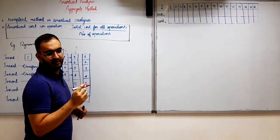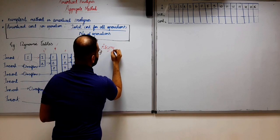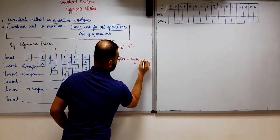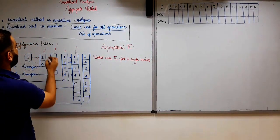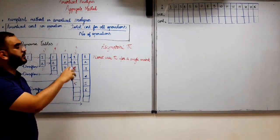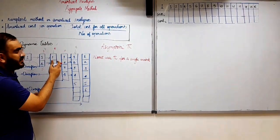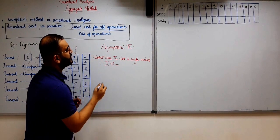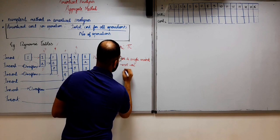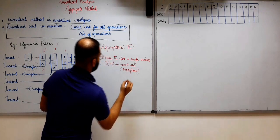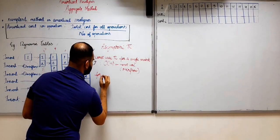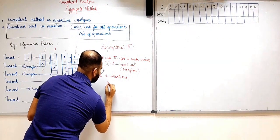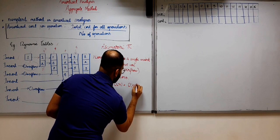Now we need to find out the asymptotic time complexity of doing these inserts in the dynamic table. What is the worst case time complexity for a single insert? As you can see in the overflow cases, for a single insert we had to copy all the previous elements and insert the new element, so the time complexity in such a case is O(n). This worst case happens whenever there is an overflow. So for n insertions, multiplying the number of insertions by the worst case gives n times O(n), that is O(n²).